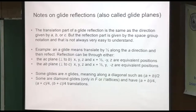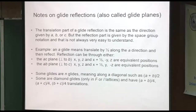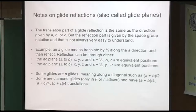The glide reflection — sometimes called glide planes — will have a letter, and the letter refers to which unit cell direction you're translating. But the position in the space group symbol tells you which plane you reflect through. An A glide means translate by one-half along the A direction and then reflect, but you can either reflect through AC or AB. So you start out at XYZ and end up at one-half plus X, minus Y, and Z.